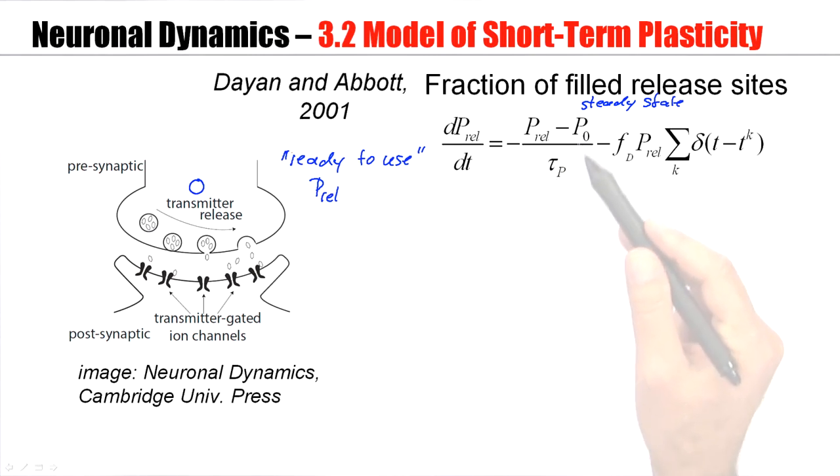There's an exponential approach back to the steady state characterized by this time constant tau P. But now suppose a spike arrives. A spike arrives and this spike causes that the vesicles open and send out the molecules into the synaptic cleft. A certain fraction of these P-rel, this fraction Fd, will merge with the membrane and will be empty afterwards. Since they are empty afterwards, they are no longer ready to use.